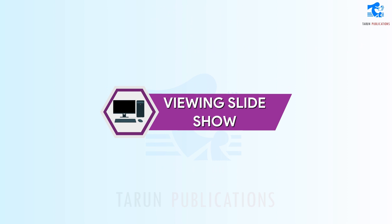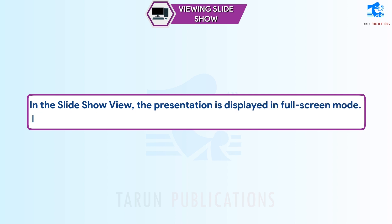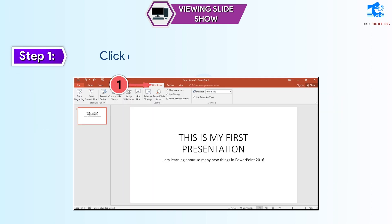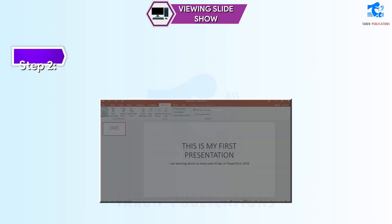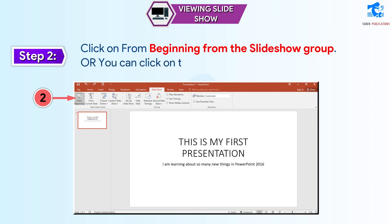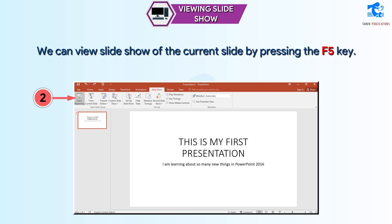Viewing Slideshow. In the Slideshow view, the presentation is displayed in full-screen mode. Follow these steps to view a presentation in a slideshow. Step 1: Click on the Slideshow tab from the ribbon. Step 2: Click on From Beginning from the Slideshow group. Alternatively, you can click on the Slideshow view icon on the status bar. We can also view the slideshow of the current slide by pressing the F5 key.